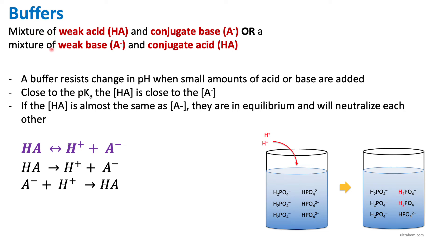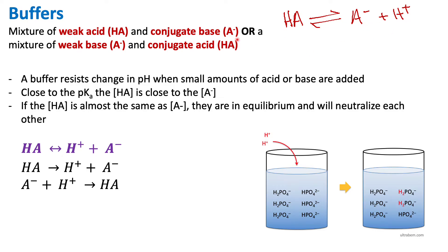Buffers are a mixture of either weak acid and conjugate base, or weak base and conjugate acid. For example, the most general example we talk about is that a weak acid HA can dissociate into A- and H+, where HA is the weak acid, and A- is the conjugate base.